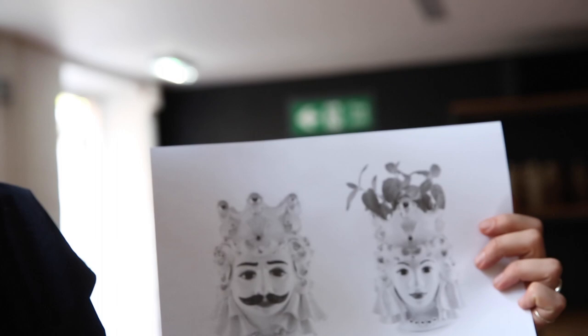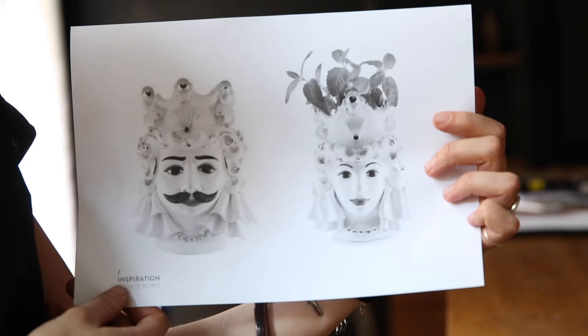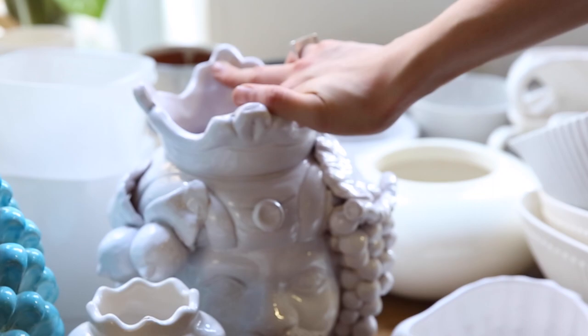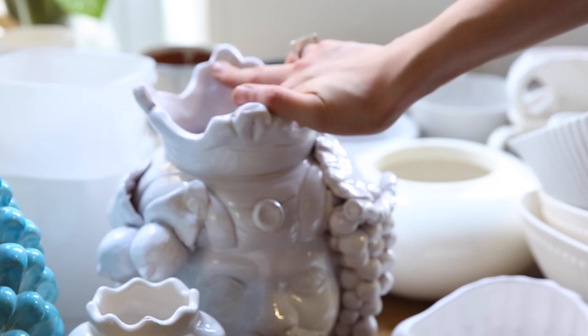The whole theme is developed out of this, which is called Testa di Moro. It means head of a Moro. The Moros were the people belonging from the northern part of Africa, and they conquered Spain and the south of Italy and Sicily for a lot of centuries.